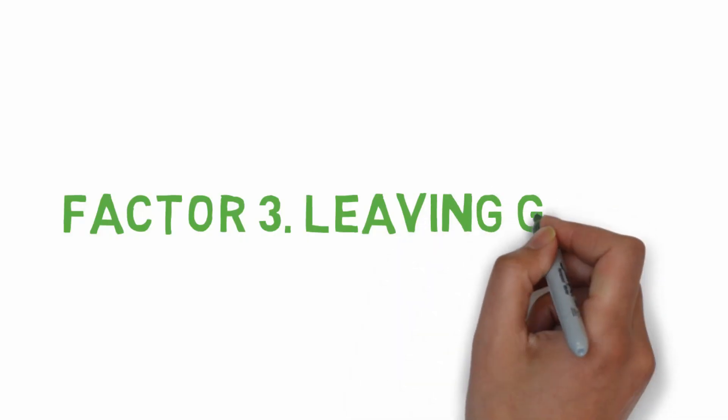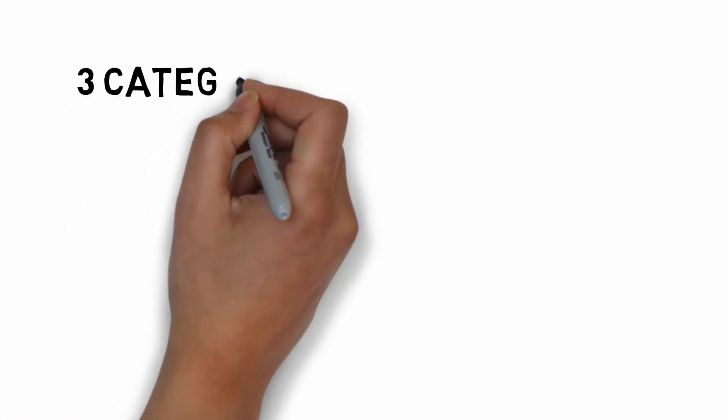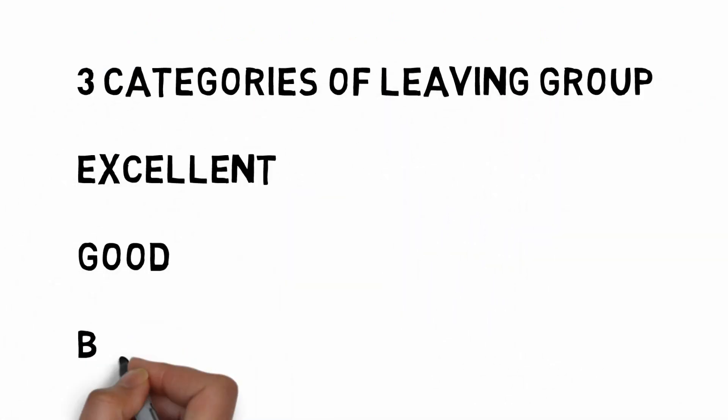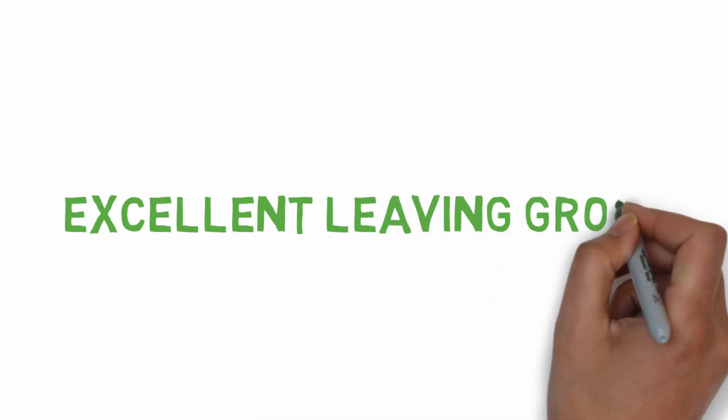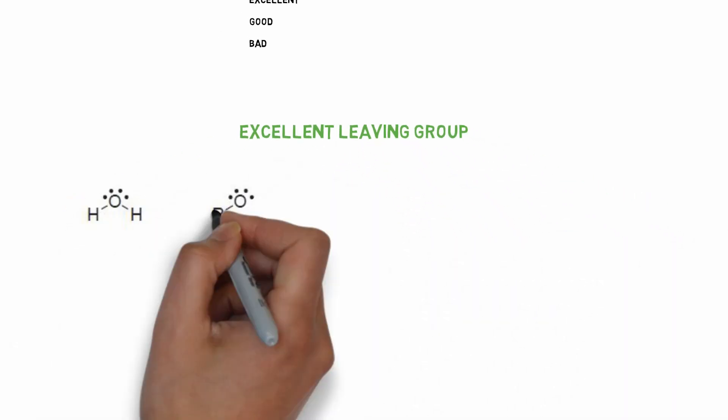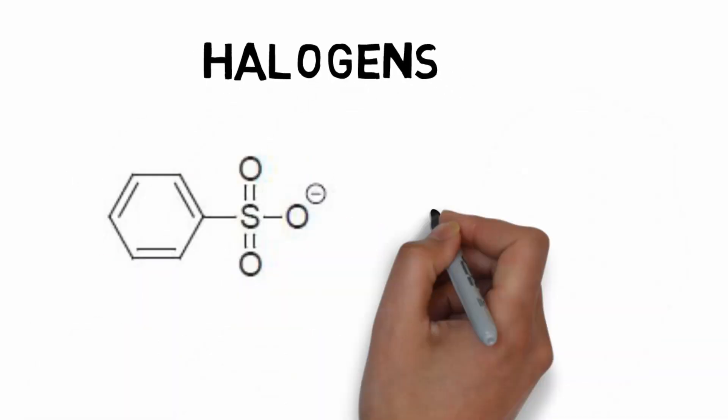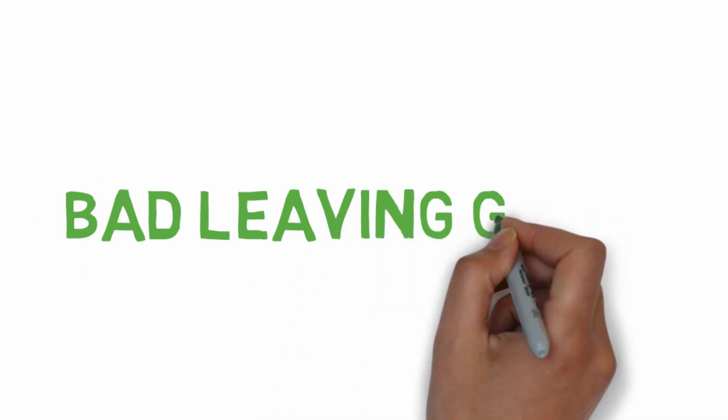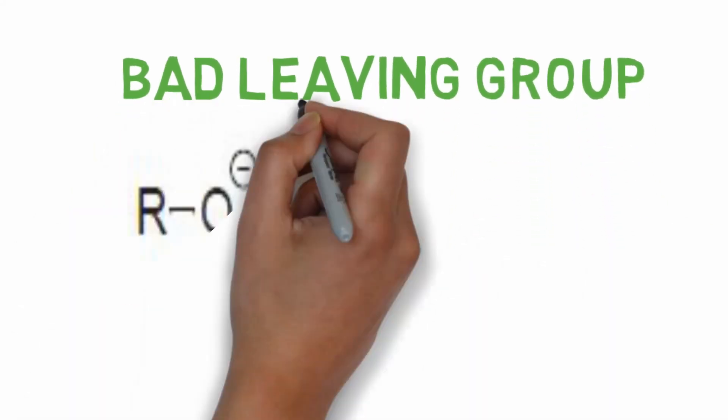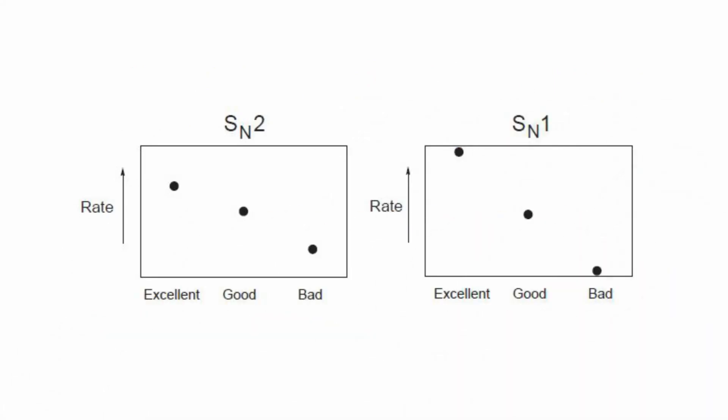There are two types of leaving groups: excellent, good, and bad. Leaving groups with lone pairs are excellent. With stable charge or resonance stabilizing ability are good. And leaving groups with unstable charge are bad. Both SN2 and SN1 will need electrophile for sure. And the more excellent the leaving group is, the better reaction speed we'll achieve. If we look at the trend, it shows similarities.